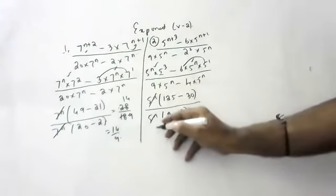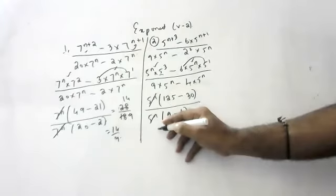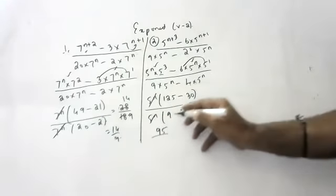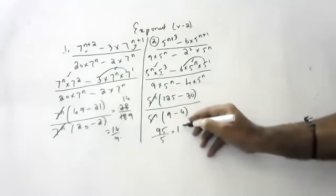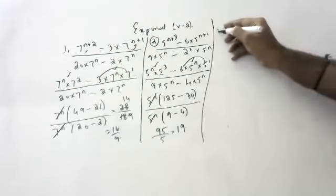5 to the power n cancels. Numerator: 125 minus 30 equals 95. Denominator: 9 minus 4 equals 5. So 95 by 5 equals 19. Very good.